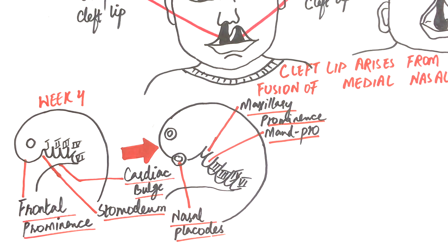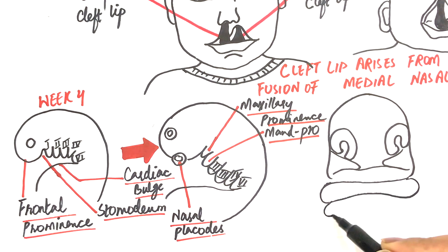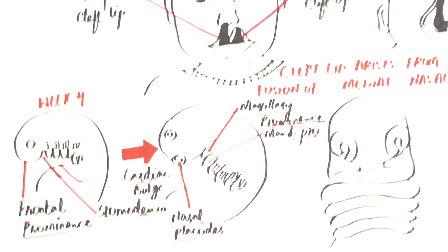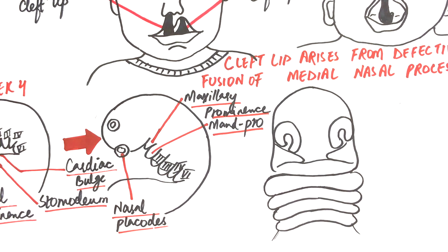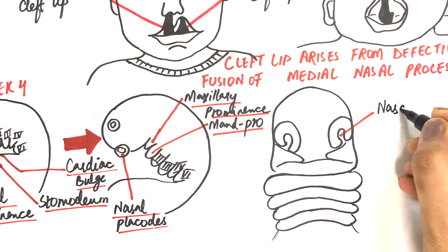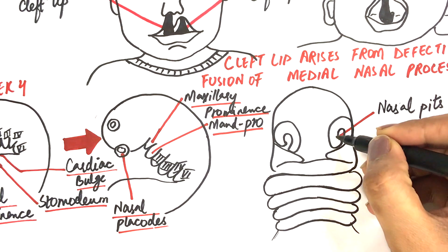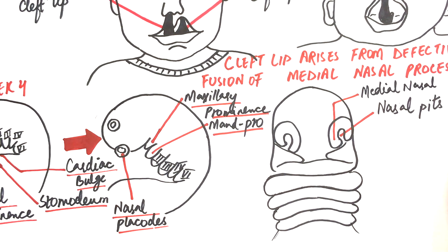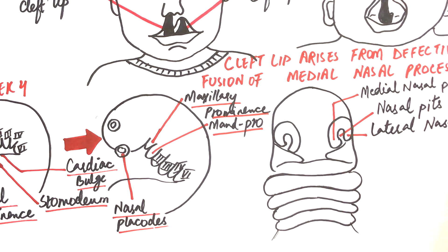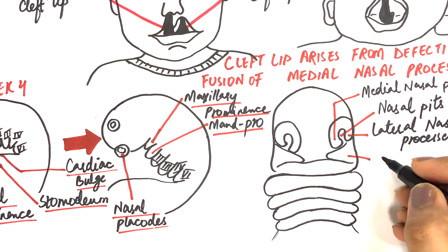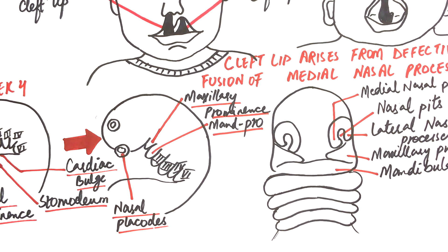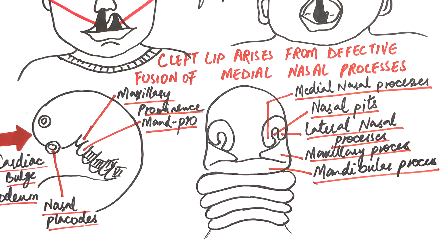The processes or prominences on a frontal view will look something like this. As the embryo enters its fifth week, the tissue surrounding the nasal placodes rapidly proliferates and increases in thickness, converting the nasal placodes into the nasal pits. The nasal pits will eventually become our nostrils. The bulging of tissue at the medial site of each nasal pit is named the medial nasal process, and that at its lateral site is named the lateral nasal process. By this time we have two medial nasal processes facing each other from both sides, and two lateral nasal processes located apart from each other.